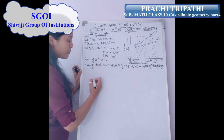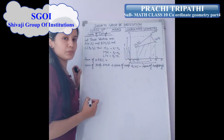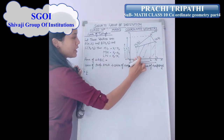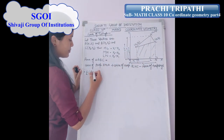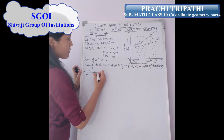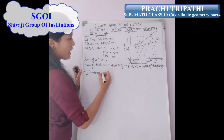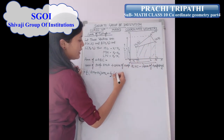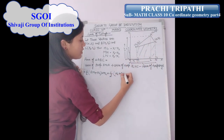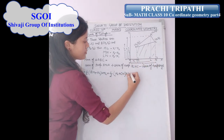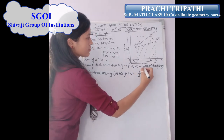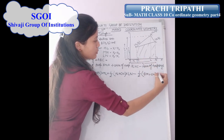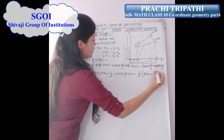We know that the area of a trapezium is 1/2 times the sum of parallel sides into height. So area of trapezium BMNA is 1/2 times (BM + AL) into ML. Similarly, 1/2 times (AL + CN) into LN, minus 1/2 times (BM + CN) into MN.